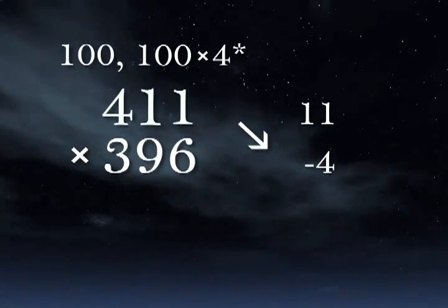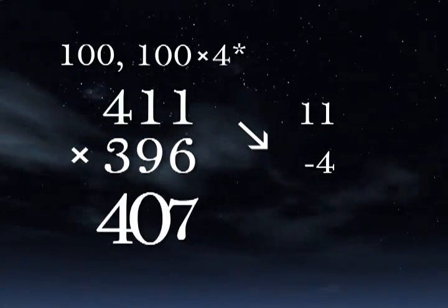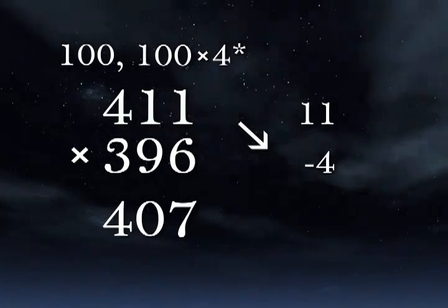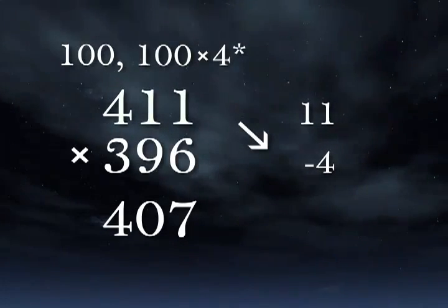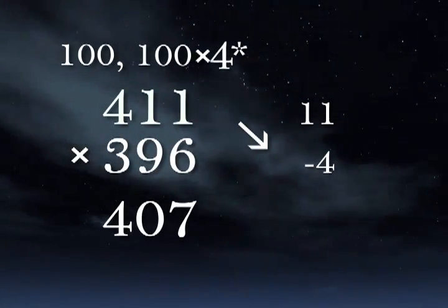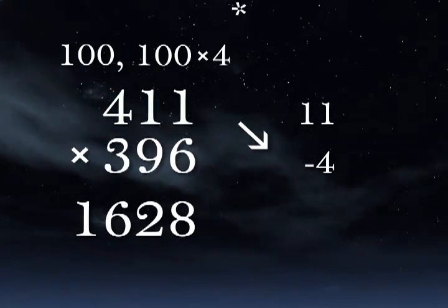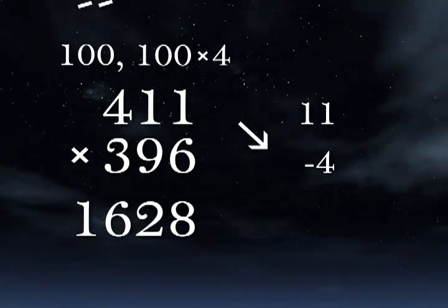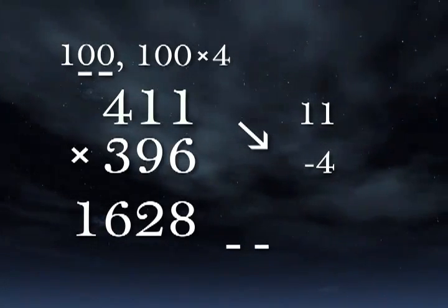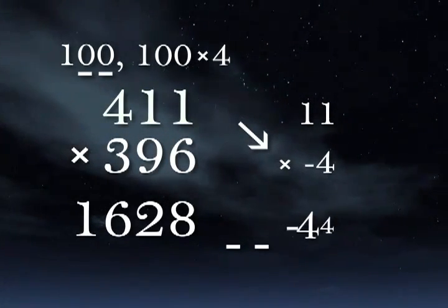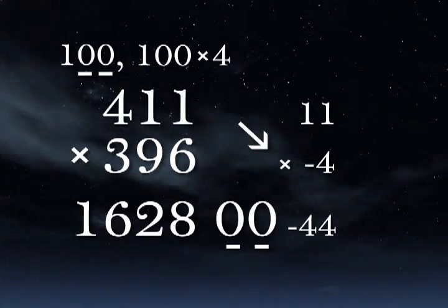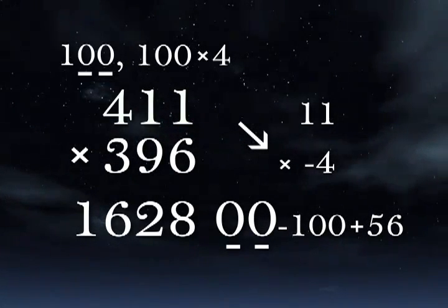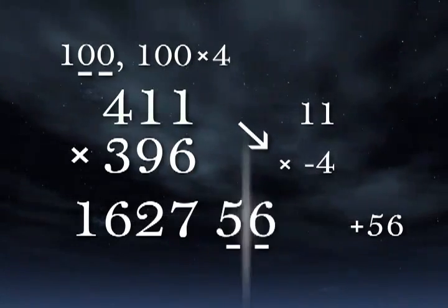Working crosswise, 411 minus 4 is 407. And now we adjust that number using the operation indicated by the working base. That is to say, multiply 407 times 4. 407 times 4 is 1628. 1628 is the left side of the answer. The actual base has two zeros, so the answer's right side gets two digits. 11 times negative 4 is negative 44. Let's put in two placeholder zeros and subtract 44. So oversubtract and add back the complement. Subtract 100 and add back 56.